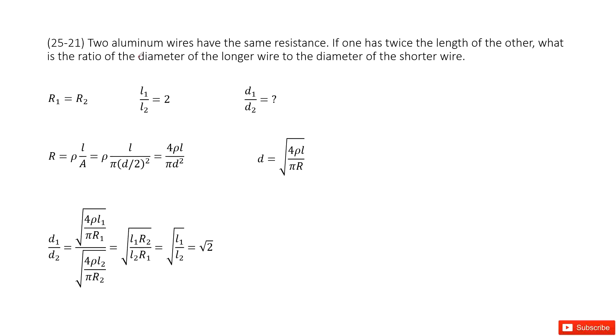It asks what is the ratio of the diameter of the longer wire to the diameter of the shorter one. The longer one is L1, so we need to find the ratio D1 over D2.